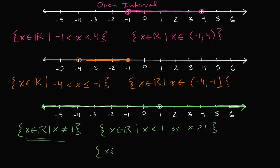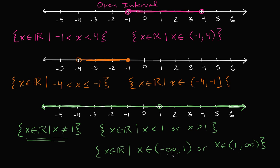You could also write it as a union of two intervals: x is a member of the real numbers such that x is a member of the interval from negative infinity to one (not including one), or x is a member of the interval from one (not including one) to positive infinity. When talking about negative infinity or positive infinity, you always use a parenthesis, because you can never include everything all the way to infinity — it keeps going on forever. So you use open interval notation at those endpoints. This means x can be anything other than one.